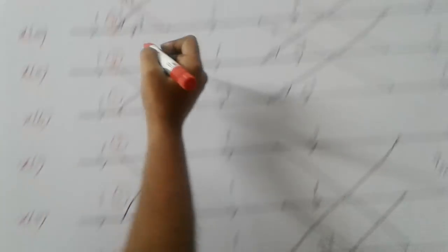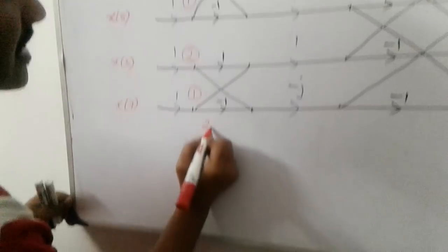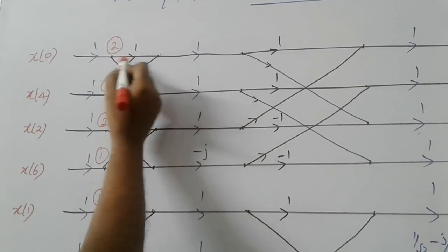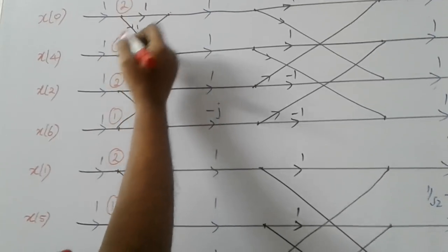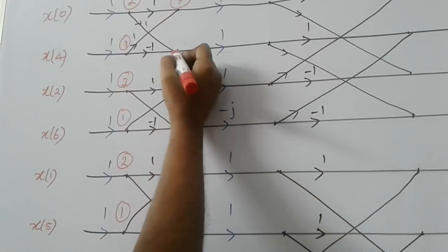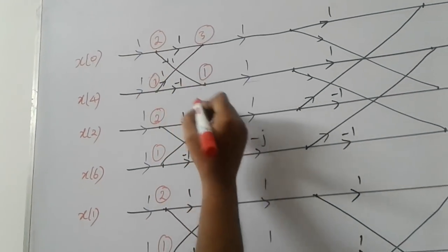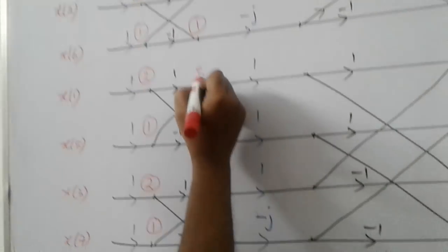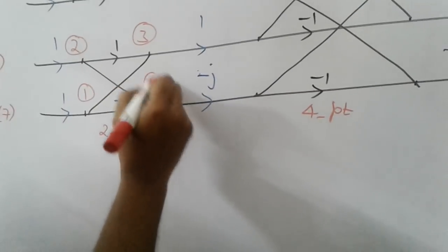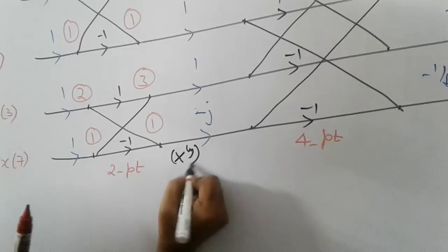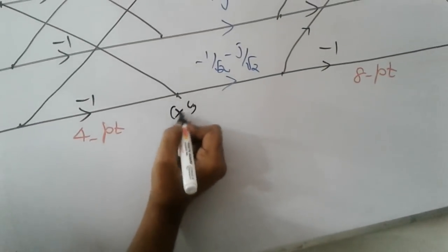Input only is bit reversal. What is x of zero? x of zero is 2. Put a circle. x of 4 is 1. x of 2 is 2. Put a circle just to avoid confusion. Now output of the first stage. First stage as I told you it is 2-point DFT. If you take this as A and this as B, this point is A plus B. So this is A plus B means 2 plus 1, 3. This point is A minus B, 2 minus 1, 1.